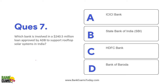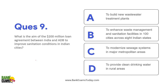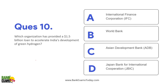Which bank is involved in the 40.5 million dollar loan approved by Asian Development Bank to support rooftop solar systems in India? — SBI is involved. How much did the Green Climate Fund approve for SIDBI to implement financing mitigation and adaptation projects in Indian MSMEs? — 15.6 million dollars. What is the aim of the 200 million dollar loan agreement between India and ADB to improve sanitation conditions in Indian cities? — To enhance waste management and sanitation across 100 cities in 8 Indian states. Which organization approved the 1.5 billion dollar loan to accelerate India's development of green hydrogen? — World Bank.